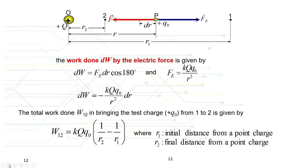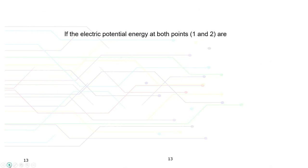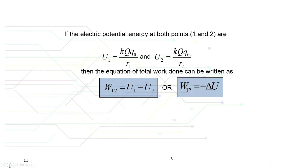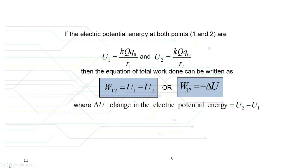The total work done in bringing a test charge from point 1 to point 2 is given by the corresponding integral. If the electric potential energy at points 1 and 2 are kqq₀/r₁ and kqq₀/r₂ respectively, the total work done can be written as W₁₂ = U₁ − U₂, or W₁₂ = −ΔU, where ΔU is the change in electric potential energy between U₂ and U₁.